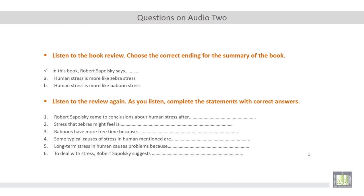Yes. In this book, Robert Sapolsky says human stress is more like zebra stress or human stress is more like baboon stress. What do you think? Yes. According to the book, Robert Sapolsky said that human stress is more like baboon stress. So the correct answer is B.